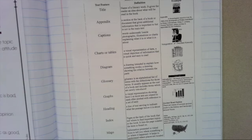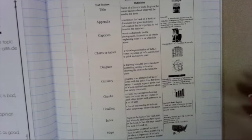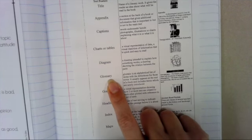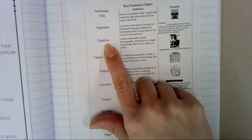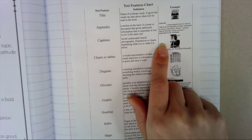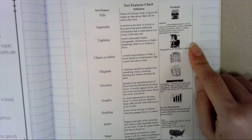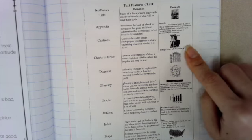It can also mean using different sources within the same text to get information from. For example, if you had a book about alligators, you could get information from a glossary. Captions by pictures are always a great source of information that a lot of kids just skip over. Captions are important to pictures.